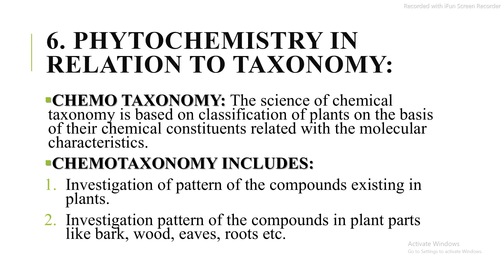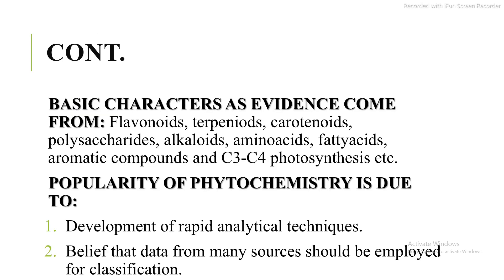Sixth, phytochemistry in relation to taxonomy. Chemotaxonomy is the science of chemical taxonomy based on classification of plants on the basis of their chemical constituents related with molecular characteristics. It includes investigation of patterns of compounds existing in plants and in plant parts like bark, wood, leaves, and roots. Basic factors as evidence come from flavonoids, terpenoids, carotenoids, polysaccharides, alkaloids, amino acids, fatty acids, aromatic compounds, and C3 to C4 photosynthesis. Its popularity is due to development of rapid analytical techniques.